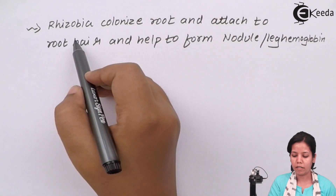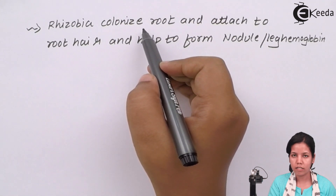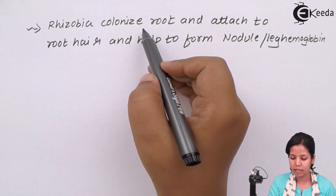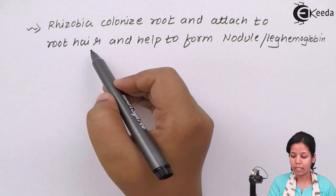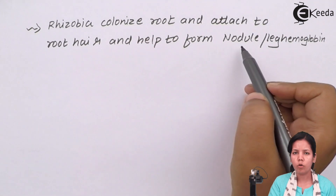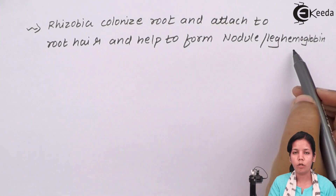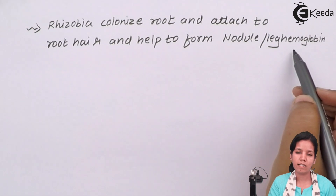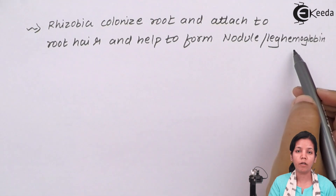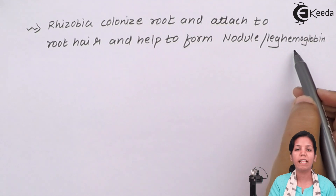Rhizobia bacteria colonizes and attaches to fix nitrogen in leguminous plants. They attach to the root hairs and form nodules or ball-like structures, which contain leghemoglobin, in which nitrogen is fixed in a usable form. So whenever you see nodule formation in leguminous plants, it means the bacteria Rhizobia has fixed nitrogen in that plant.